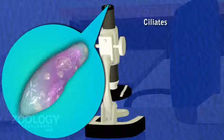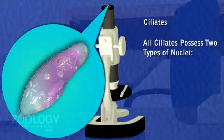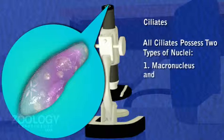Besides the possession of these locomotor organelles, all ciliates possess two types of nuclei and a unique form of sexual reproduction called conjugation.